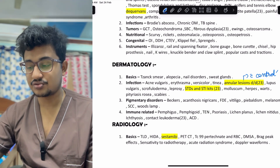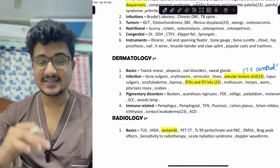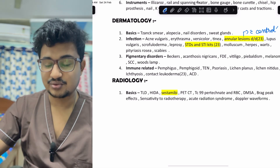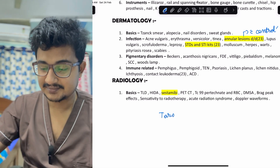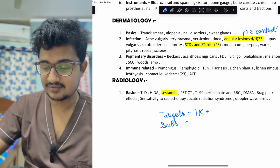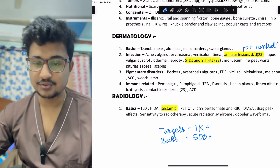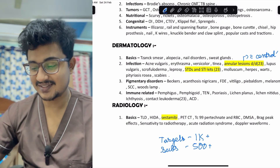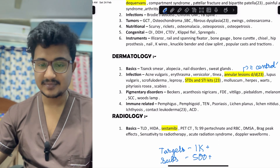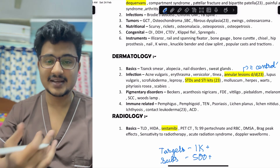Acute radiation syndrome and Doppler waveforms of arteries and veins complete the radiology section. This completes the basic subjects — this is the second video of a three-video series. To get the PDF, the target is 1K likes or 500 plus subscriptions across the three videos. It will be uploaded to the ProPack. Do join my Telegram channel and follow me on Instagram where I teach short topics.